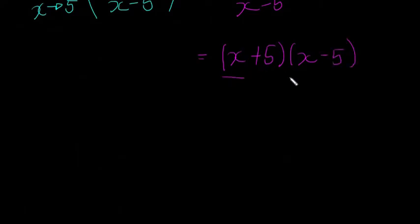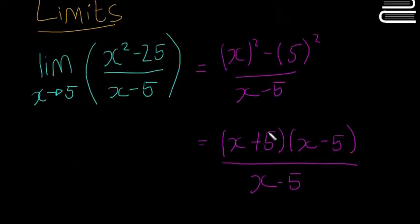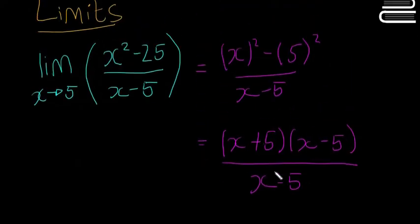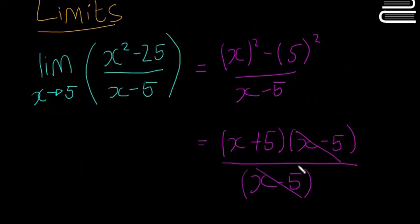x squared minus 5 squared, difference of two squares, you can factorize that into x plus 5 and x minus 5. This is the exact same, just written in a different way. Now you might also see that x minus 5 here and x minus 5 here you can cancel them.